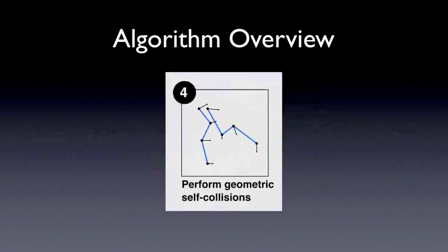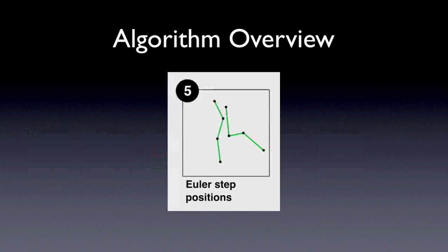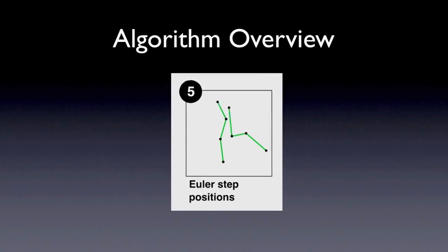While the bulk collision behavior is correct, local interpenetrations may have occurred, so we now perform geometric self-collisions creating high fidelity detail. Lastly, we Euler step positions using the final velocities to obtain the final positions of the time step.